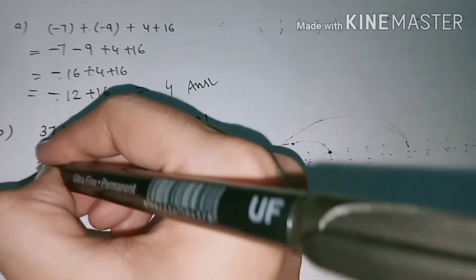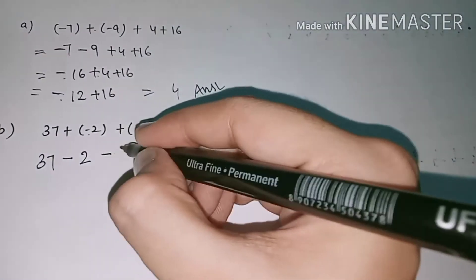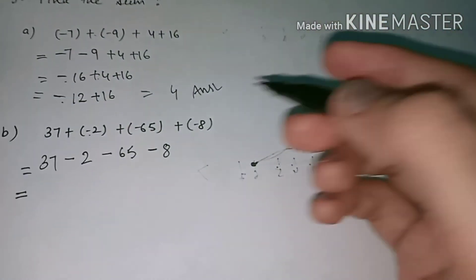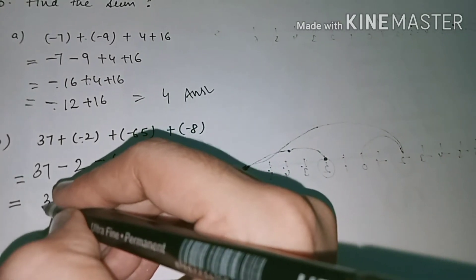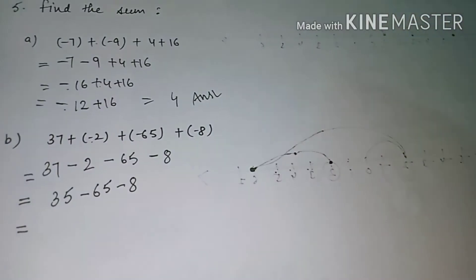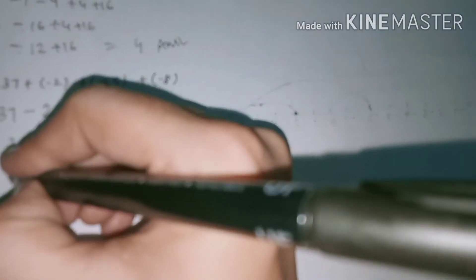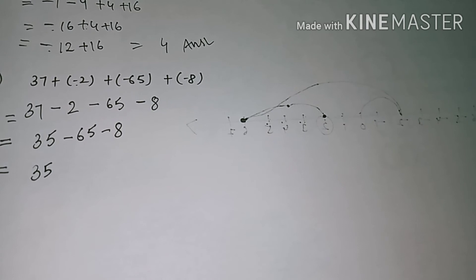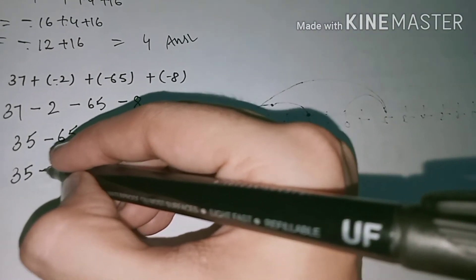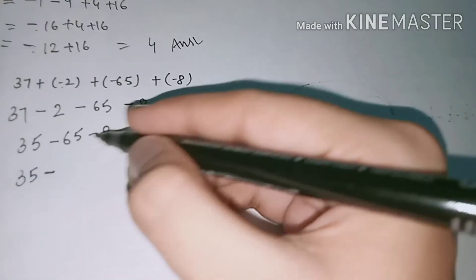Now next is B part. First open this sign: 37 minus 2, minus 65, minus 8. What do you do directly? 37, 35, 65. What do you do? 35, 65. Or 35 plus which sign? Plus. Who is to write? Minus plus, but minus. 65. Add.